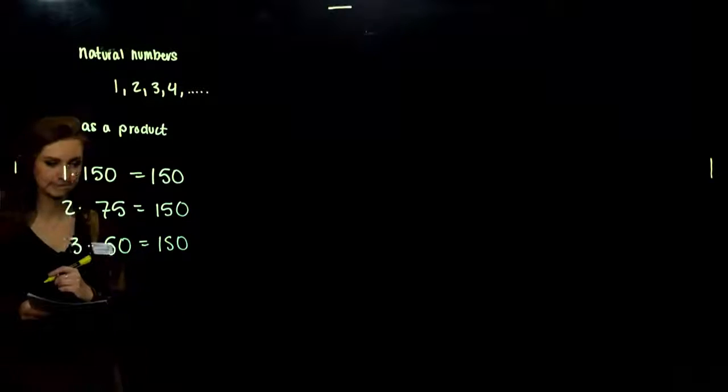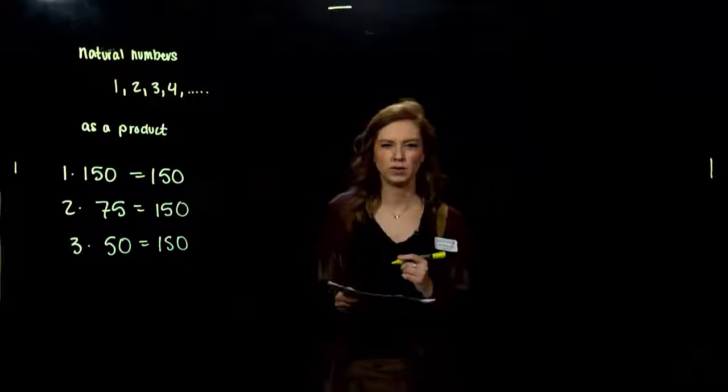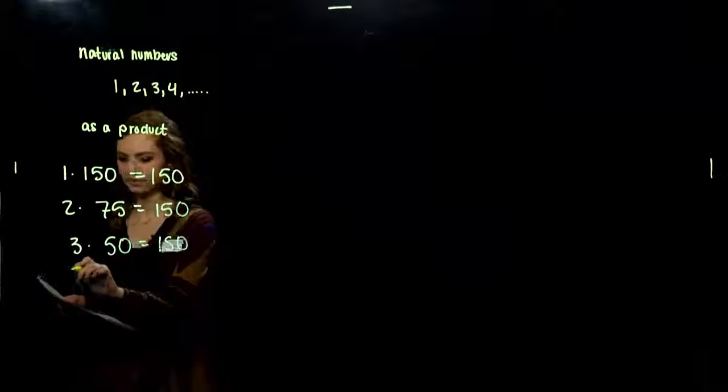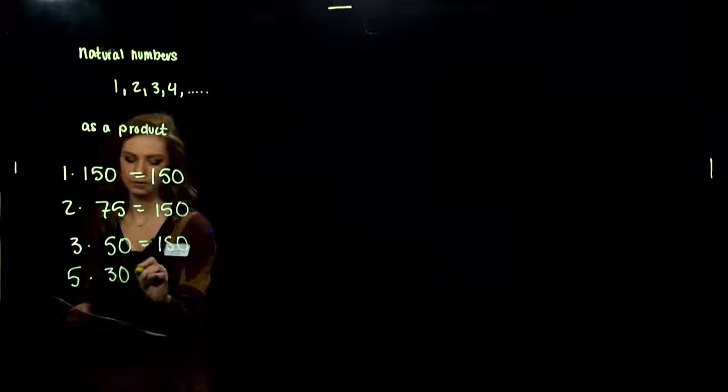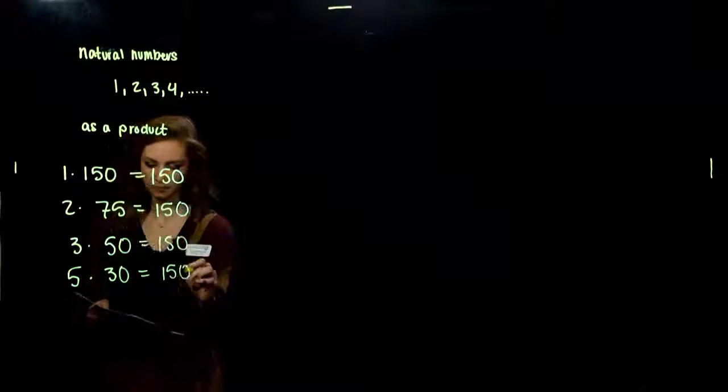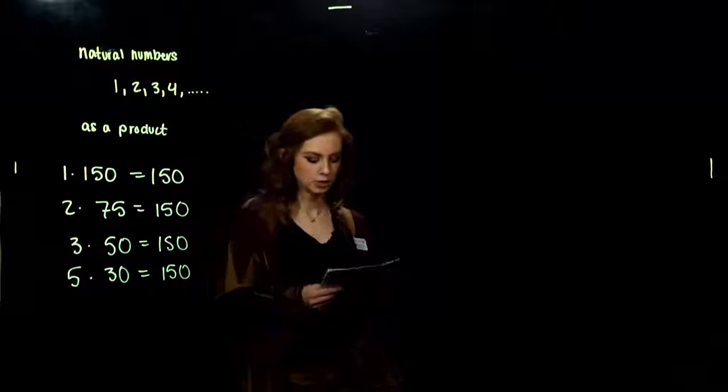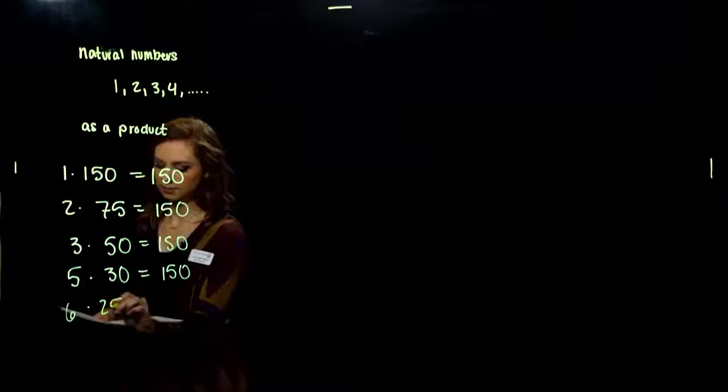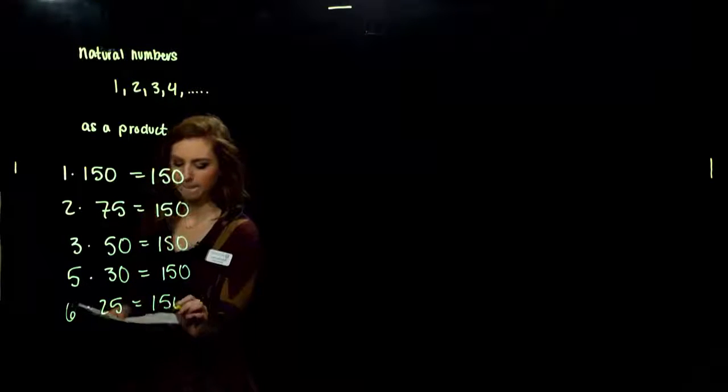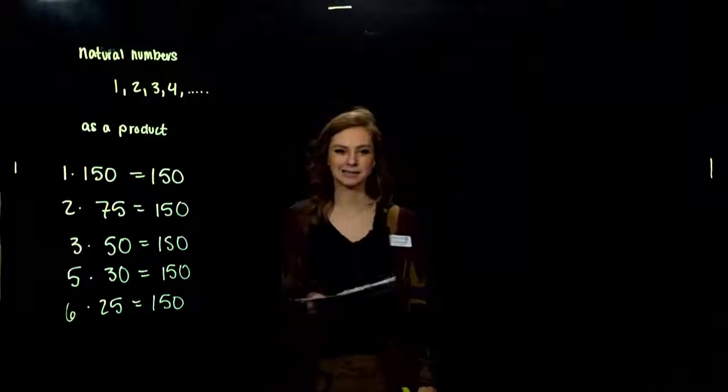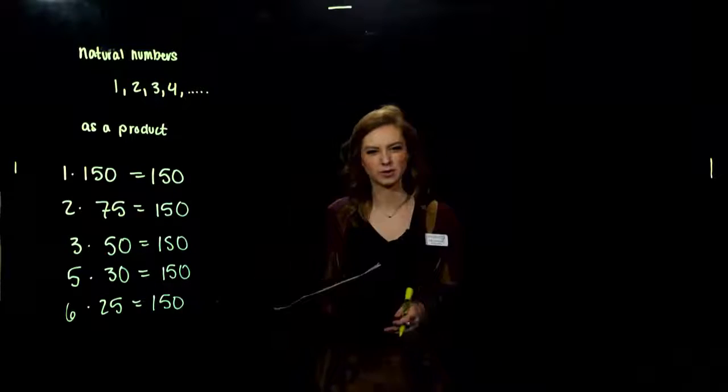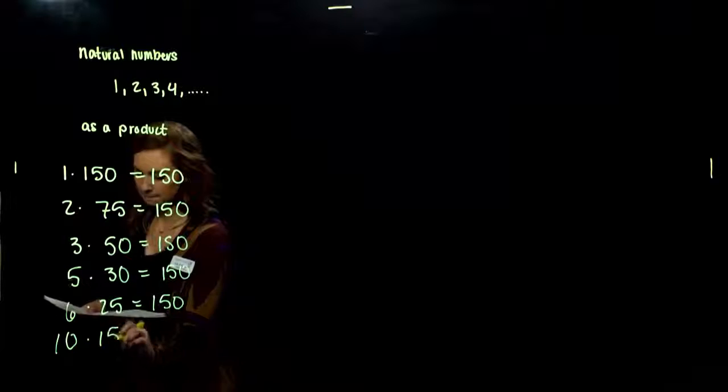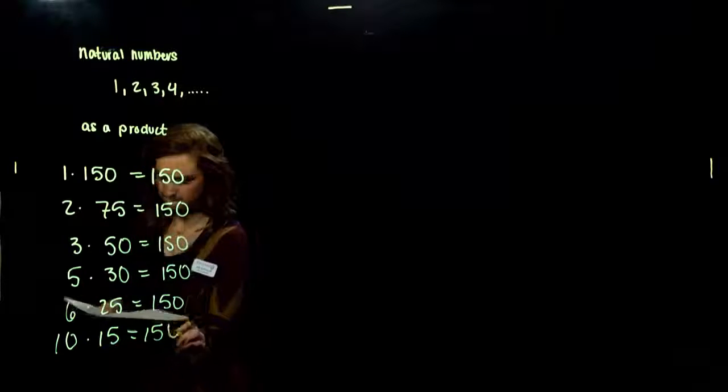How about four? Is 150 divisible by four? No, we skip that one, move on. Five. 5·30. Also gives us 150. Six and 25. And lastly, kind of the natural one you want to try when you see 150, is 10. 10·15.